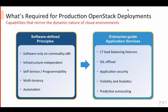You want to combine these software-defined principles with enterprise-grade application services features. Think beyond just load balancing — you need L7 load balancing capabilities, SSL offload and security, visibility, analytics, and the ability to automatically scale based on real-time application performance and user demand. What you need for OpenStack is a combination of software-defined principles with enterprise-grade application services.